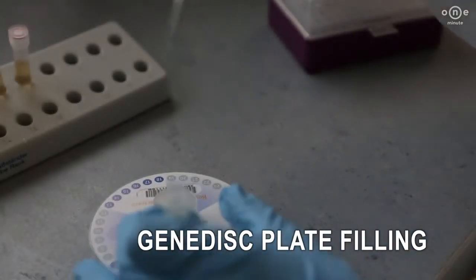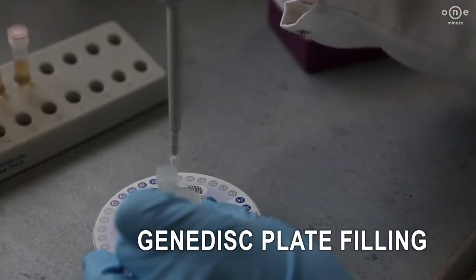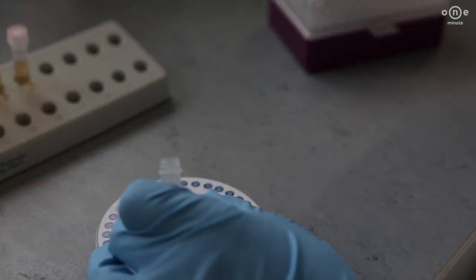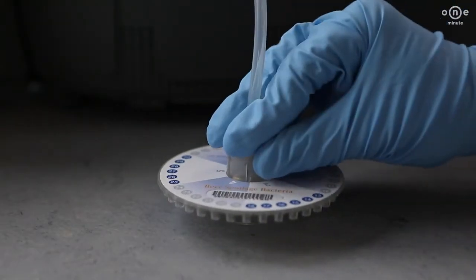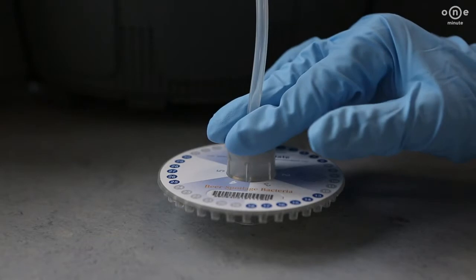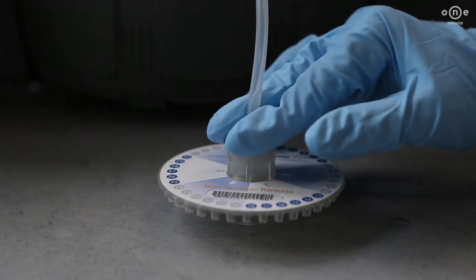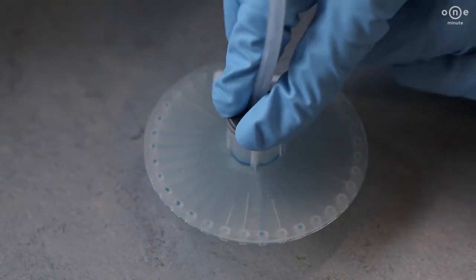While the instrument is heating, you can fill the GeneDisc plate with extracted DNA and the master mix. The sample DNA is transferred to the peripheral wells due to the vacuum step. The wells are then sealed with mineral oil to prevent evaporation.